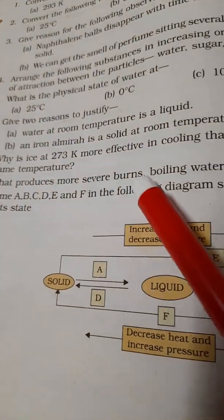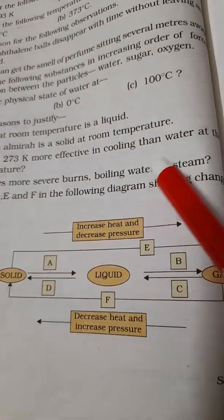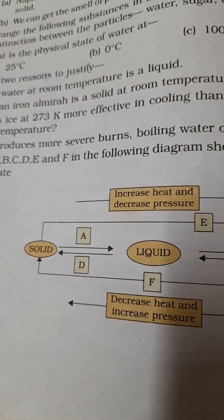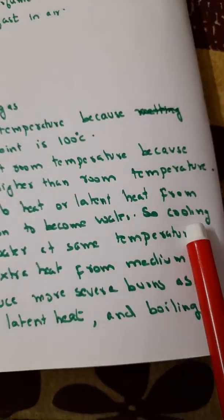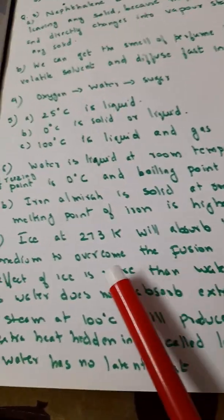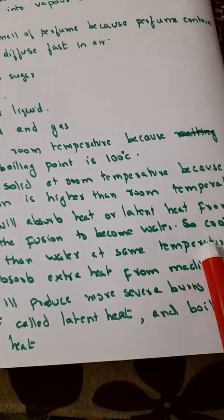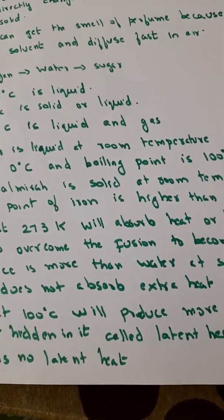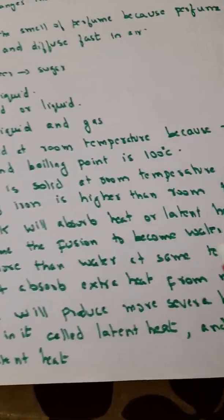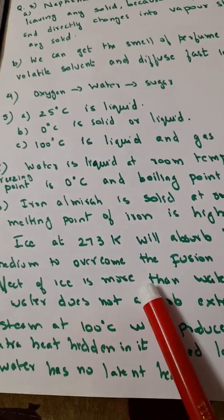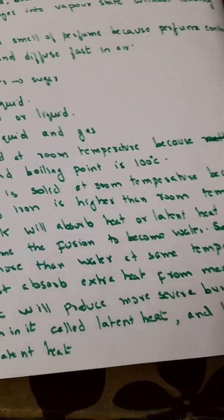Now next question is seventh question: why is ice at 273 Kelvin more effective in cooling than water at same temperature? Because ice at 273 Kelvin will absorb heat or latent heat, latent heat means hidden heat, from medium to overcome the fusion to become water. Because only if it absorbs heat then ice melts and becomes water. So cooling of ice is more than water at the same temperature.